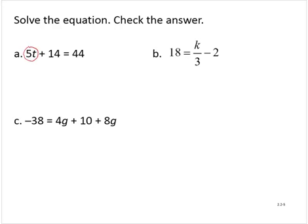Remove any other terms from that side of the equation. So I have this plus 14. I'll subtract 14 from both sides. Simplifying yields 5t is equal to 30.